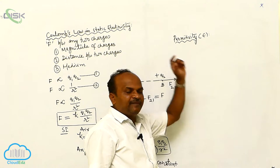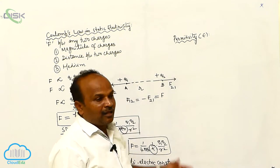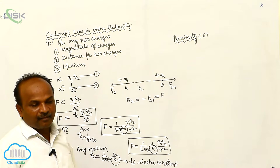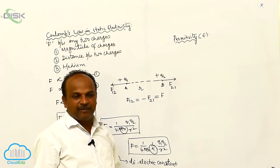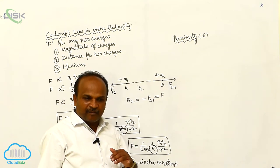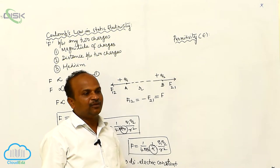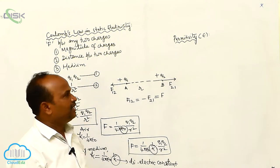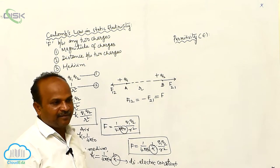What is the definition? The electrical property of the medium which determines the force between the two charges placed in that medium is called electric permittivity.